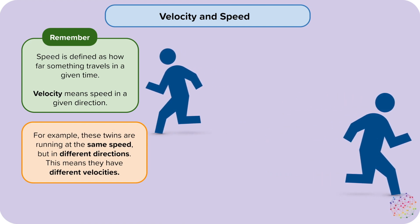For example, these twins are running at the same speed but in different directions. This means they have different velocities.